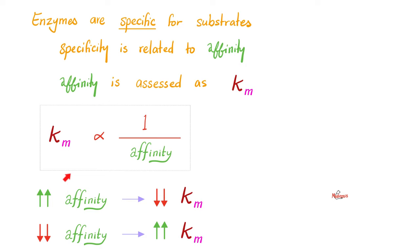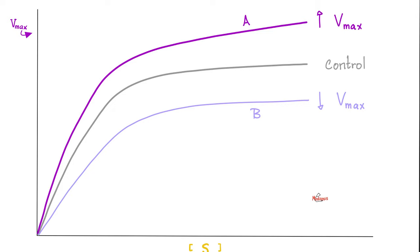We can assess affinity by Km. However, they are inversely related. The higher the affinity, the lower the Km. The lower the affinity, the higher the Km. Let's put all the equations here. Please pause and review.